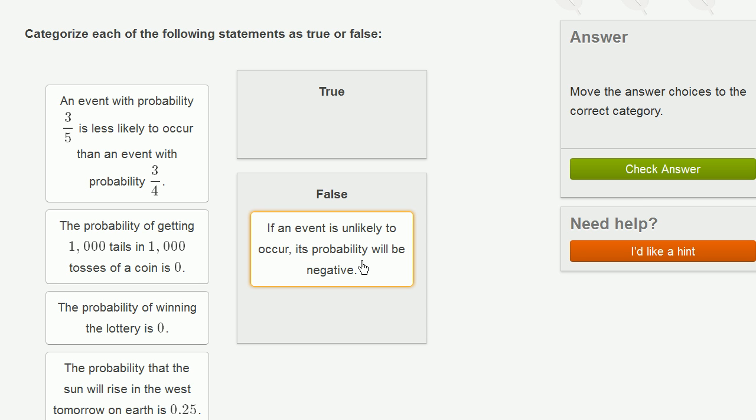Probabilities are always between 0 and 1. 0 means it is impossible, it cannot happen. 1 means that it's a certainty, that it will happen. And the values in between say how likely or unlikely they are.